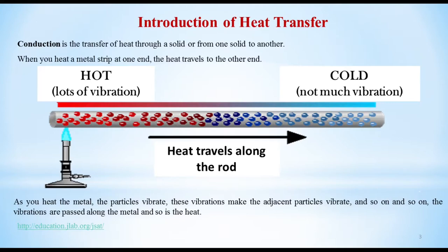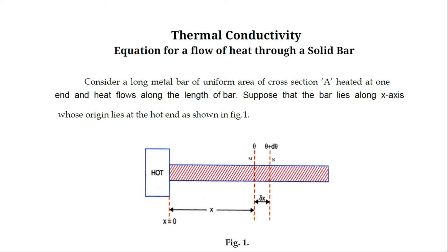We will now derive the equation for the flow of heat through a solid rectangular bar. Consider a long metal bar of uniform area of cross section A, which is heated at one end and heat flows along the length of the bar. The bar lies along the x-axis whose origin is at the hot end.